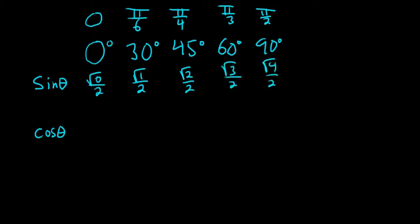Boom, just like that. So 0, 1, 2, 3, 4, and you just divide by 2 every time and you take the square root. So 0, 1, 2, 3, 4, boom.